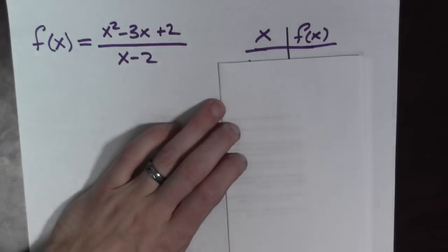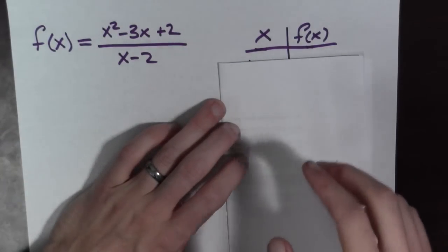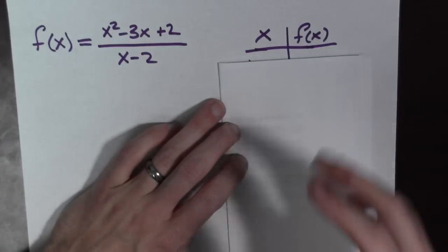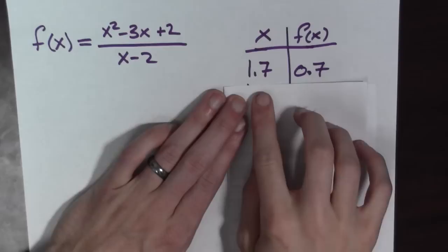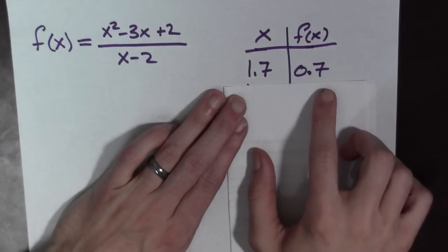So, not all is lost. What we're going to do now is plug in points that are close to x equals two. So, let's start with 1.7. If we plug in 1.7, we get 0.7 out.